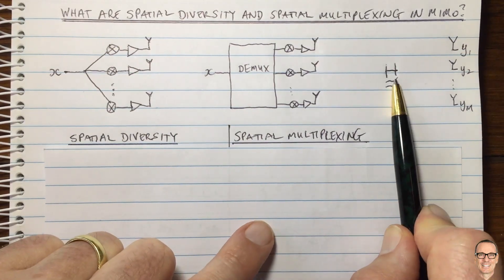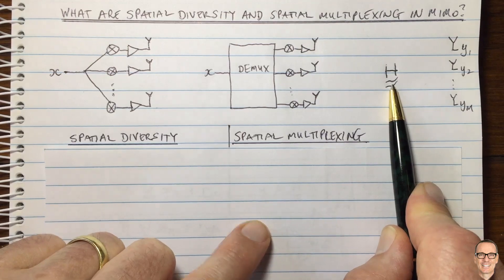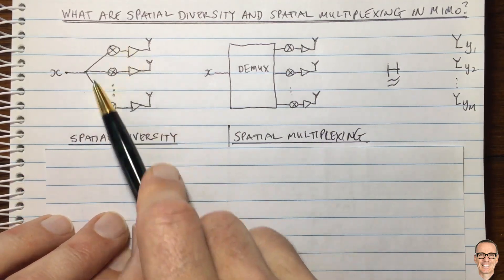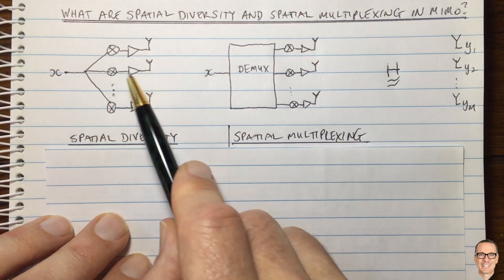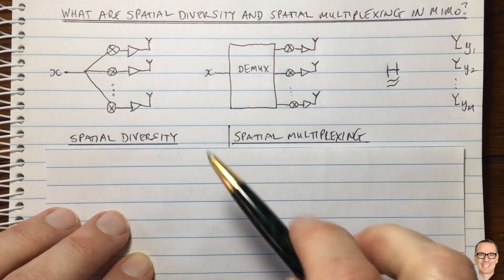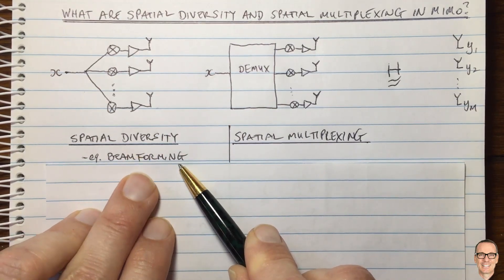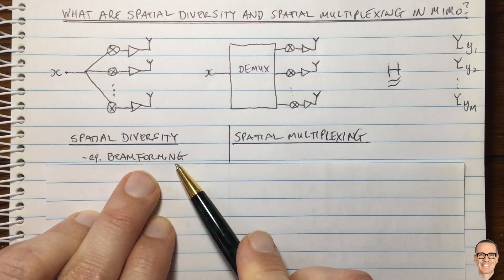So let's think about that a little more in the most basic case before we delve into the matrix. In this case, spatial diversity, one of the things you can do when choosing these phases and amplifying gains is to implement beamforming. And there's a link in the description below with more details about beamforming.